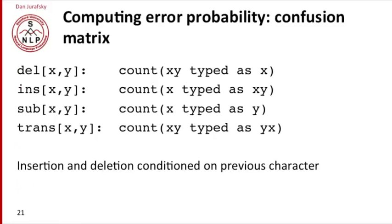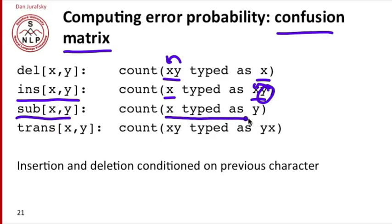We're going to create a confusion matrix. A confusion matrix says for any given pair of letters, how likely is a particular edit to happen. For example, for the pair of letters xy, we want to know how often xy is typed as x, meaning how often is a y deleted when there's an x right before it. We're also going to keep a count of insertion probabilities: how often was x typed as xy? Or we'll keep a count for substitutions: how often is x typed as y? Or transpositions: how often was xy typed as yx?